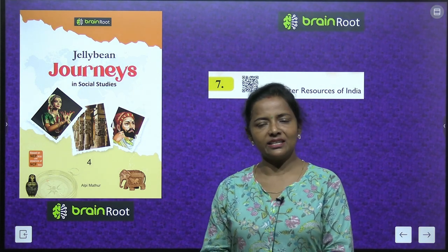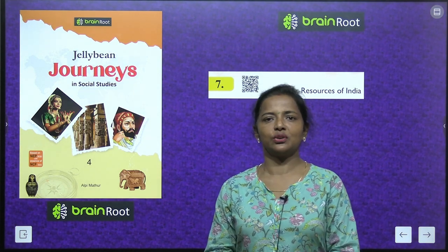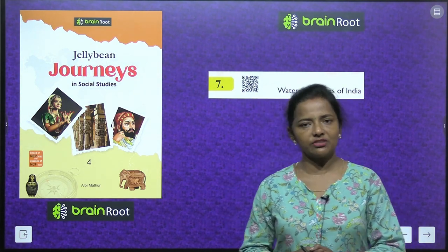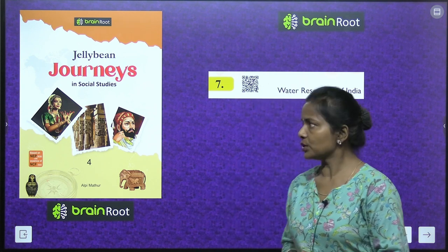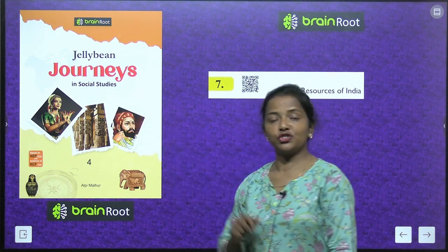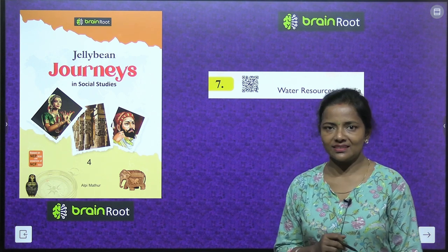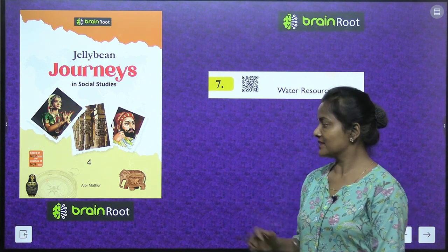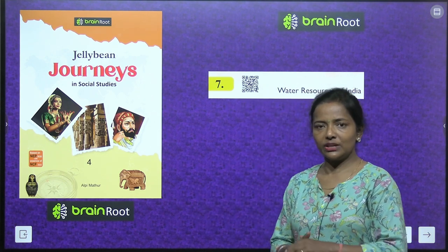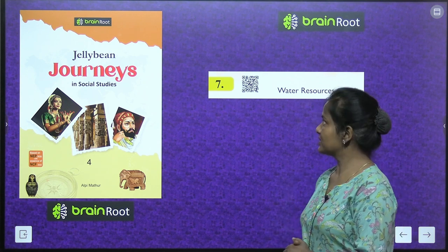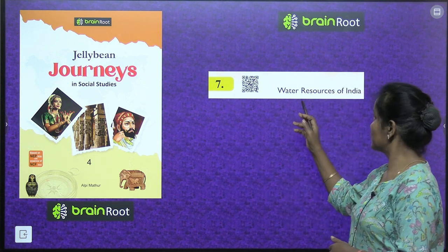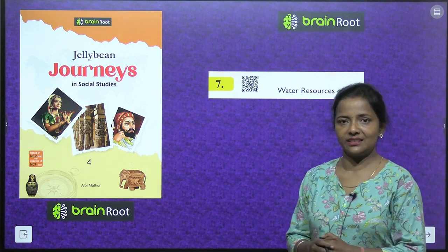A very warm welcome, dear shining stars, to your social studies class. This is your mentor Aparajita with your class 4th social studies book, Jellybean Journeys in Social Studies, by Brain Root Series. Today we are going to start chapter number 7, that is Water Resources of India.